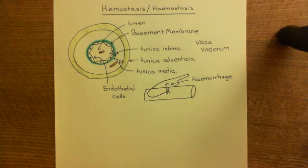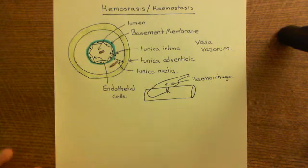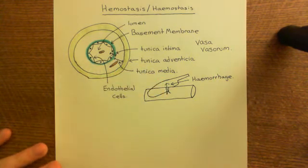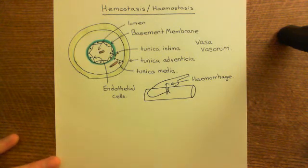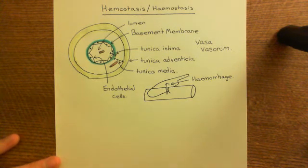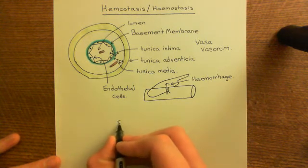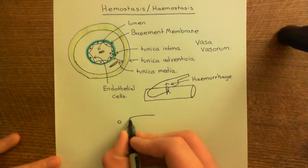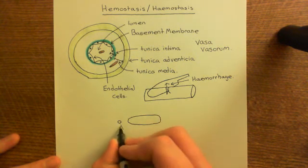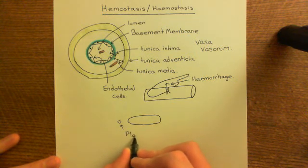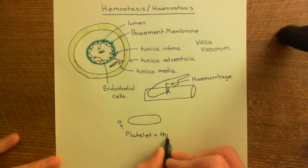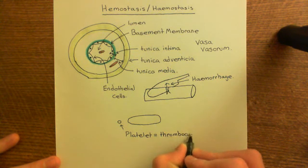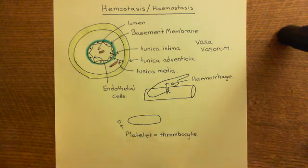The starting point for hemostasis is a component of the blood known as platelets. In the blood you have blood plasma, red blood cells, white blood cells, and then platelets - also known as thrombocytes. Platelets are tiny compared to red blood cells. We'll continue in the next video to see how platelets or thrombocytes actually lead to the hemostasis process.